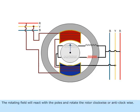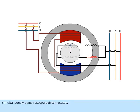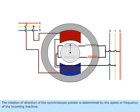The rotating field will react with the poles and rotate the rotor clockwise or anticlockwise. Simultaneously, the synchroscope pointer rotates. The direction of rotation of the synchroscope pointer is determined by the speed or frequency of the incoming machine.